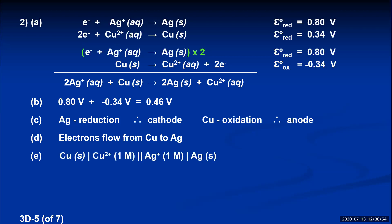The copper is the anode, so we write copper, one line, in contact with a one molar copper 2+ solution, two lines — because that solution is separated from another solution by only a salt bridge — then one molar silver ion solution, one line, silver as the cathode.